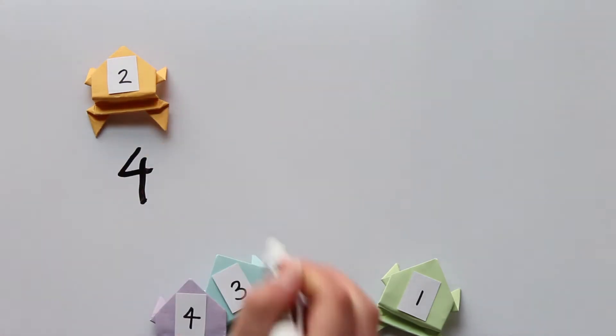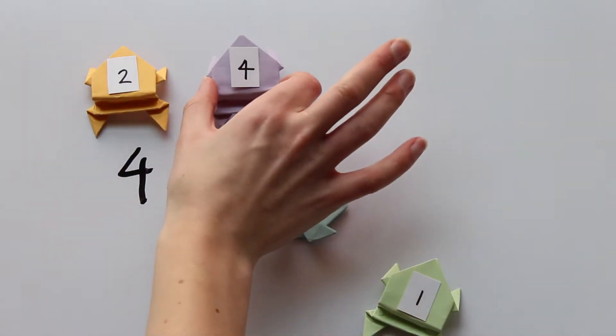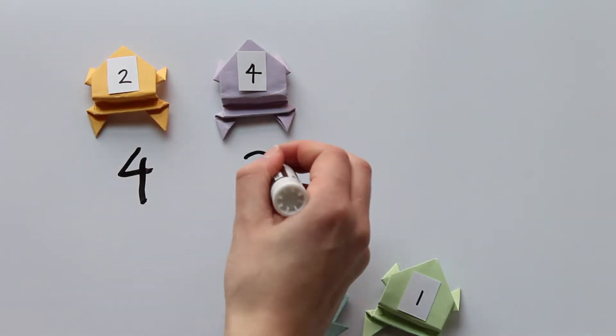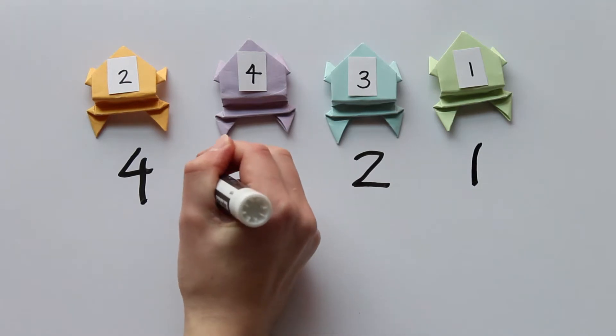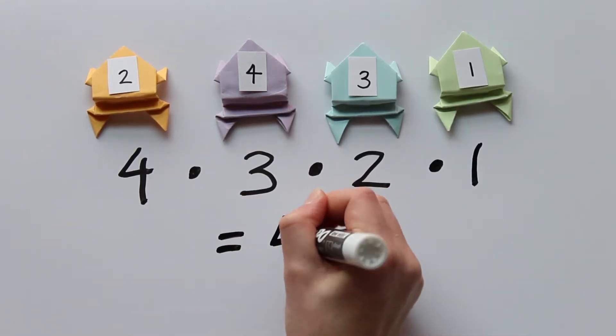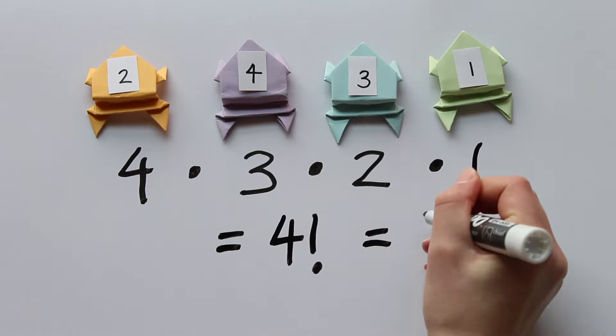There are four options for the first frog. Then after I have chosen one, there are three remaining options for the second frog, then two remaining for the third, and then one remaining for the fourth. So the total number of orderings is 4 times 3 times 2 times 1, or 4 factorial.